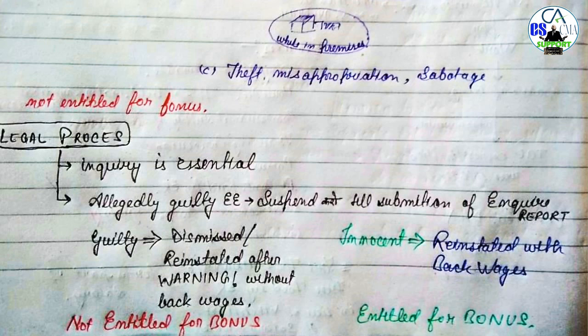In case he is found guilty, he may be dismissed or reinstated thereafter with a warning but without wages for the period of suspension. On the other hand, if he is found innocent, he will have to be reinstated with back wages as per the various labor laws, including the Industrial Dispute Act।